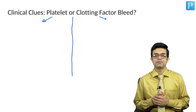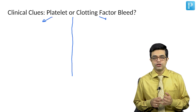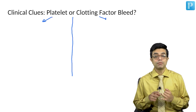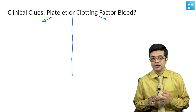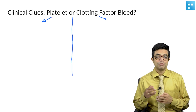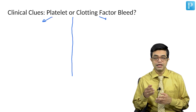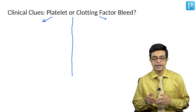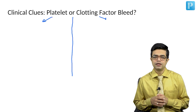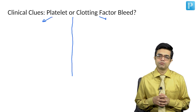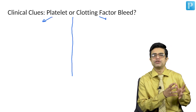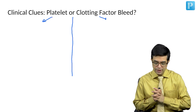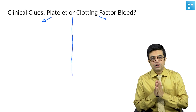Mucocutaneous bleeds include skin bleeds like petechiae and purpura/ecchymosis. They include epistaxis, bleeding gums, and hematemesis and melena — that is, bleeding from the GIT. All of this is considered superficial bleeds.